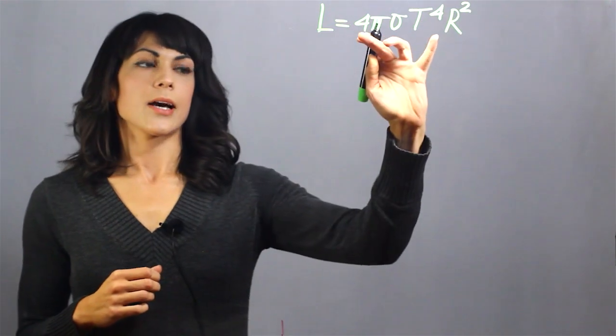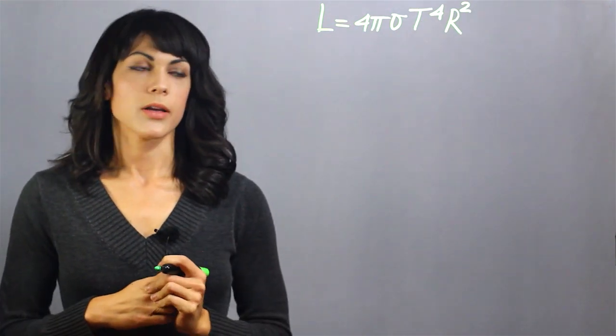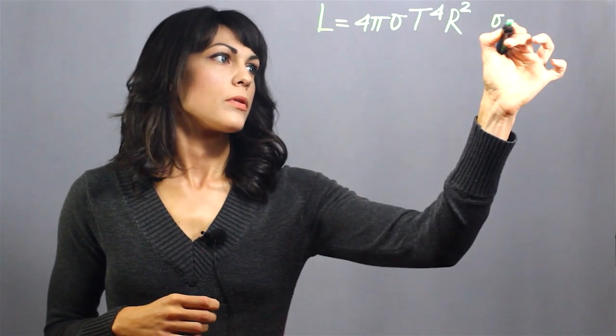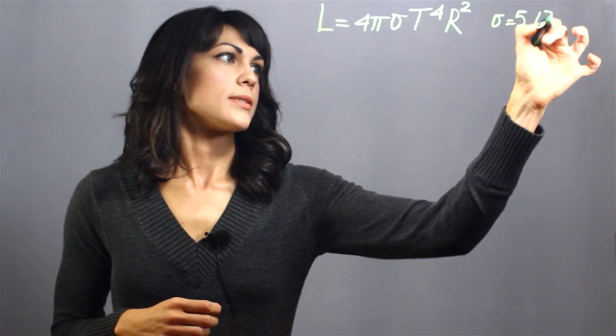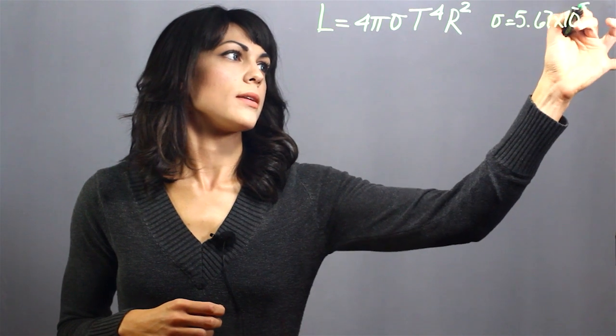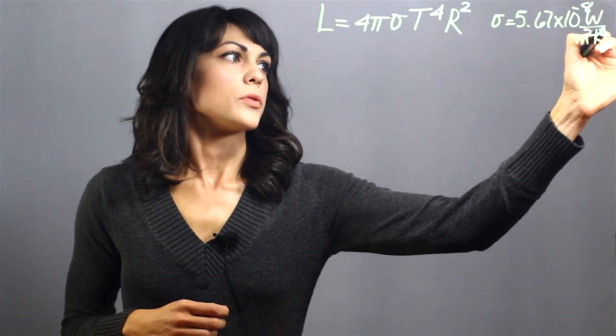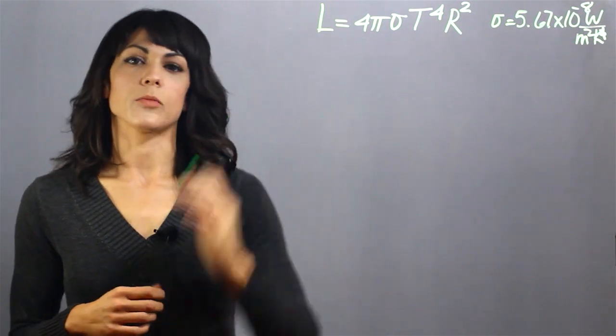So this takes into account the surface area of the star, the Stefan-Boltzmann constant that has a value of 5.67 times 10 to the minus 8 watts per meter squared kelvin to the fourth, and this is the luminosity of the star.